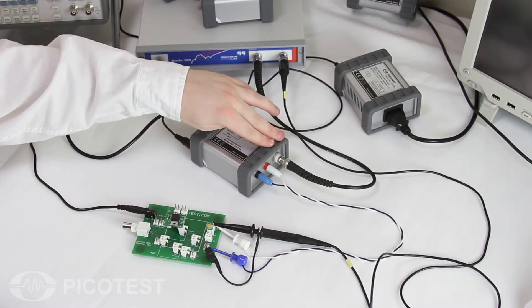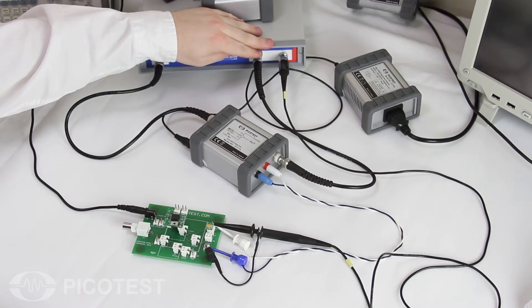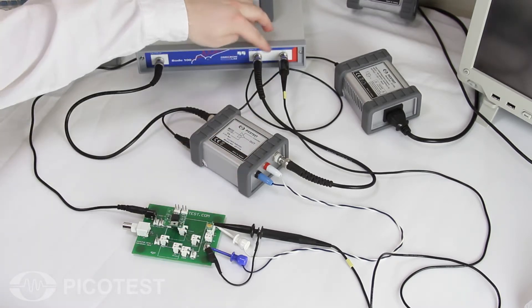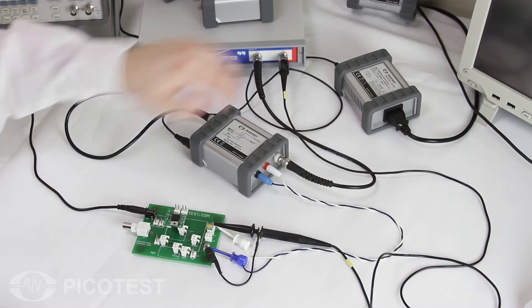The 50 ohm current sensing port is connected to channel 1 of the analyzer, and a 1 to 1 voltage probe is connected from the regulator output to channel 2 of the network analyzer. This gives us our voltage over current impedance response.